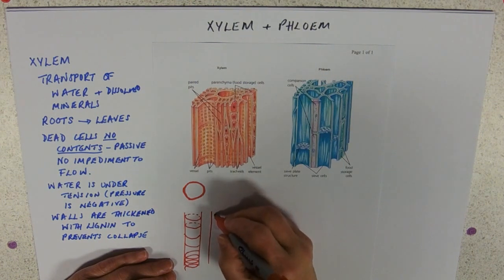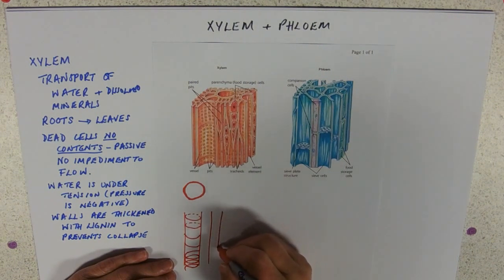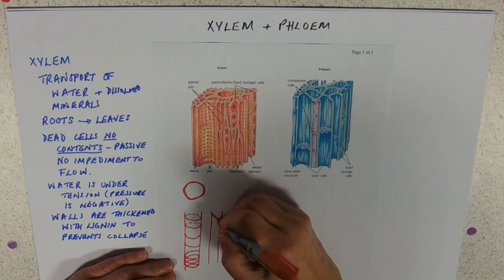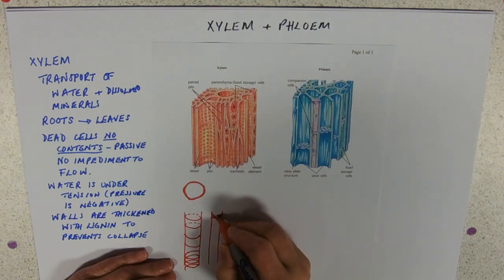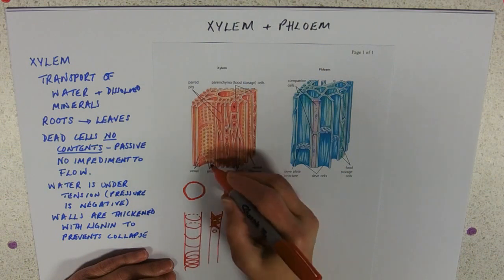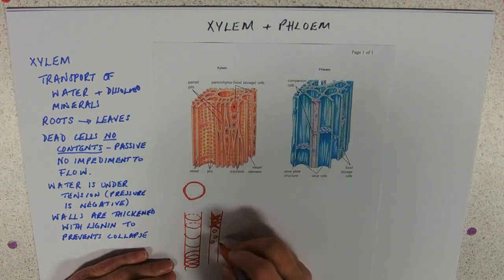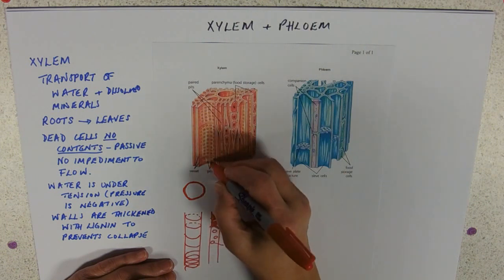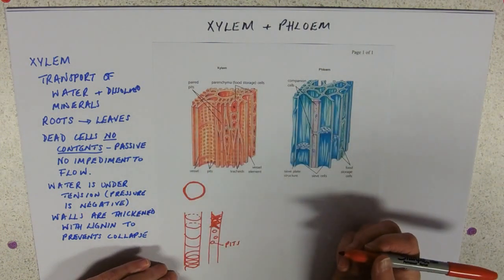And we also have reticulate thickening. Remember reticulate means network. Where sort of gradually filled in, and you get left with little holes like you see there. And those holes are called pits. Oh yeah, they're labelled for you. Here they are, three pits labelled.